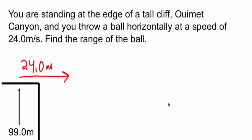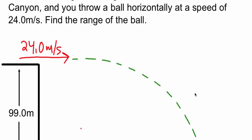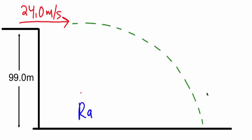Okay, we're looking at a projectile motion question. We are throwing a ball off of Lumet Canyon at 24 meters per second, and what we're trying to do is find the range. So the range is the distance from the base of the cliff to where the object is going to land.